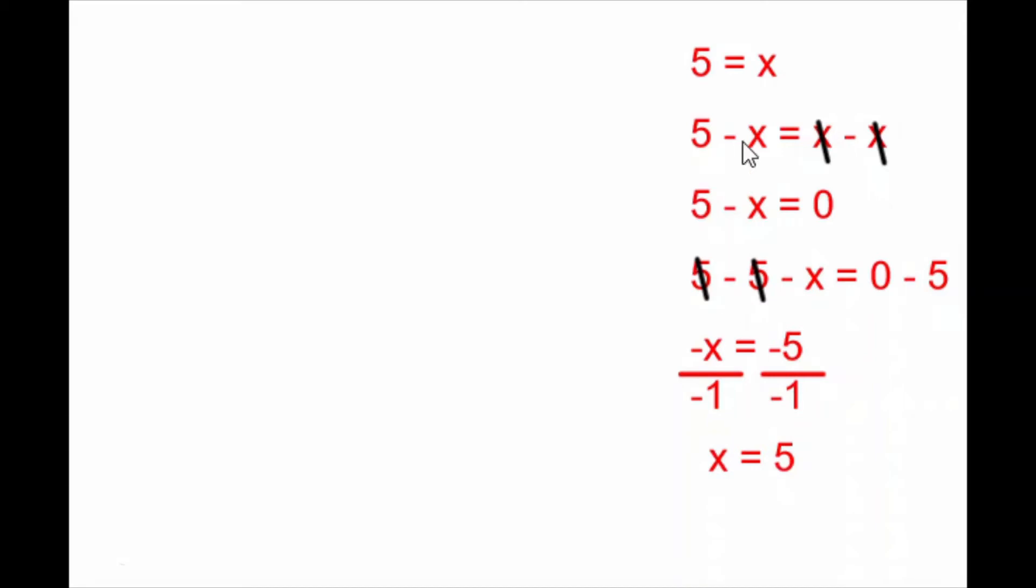I have the same equation that I started with except written backwards. And these steps show that I actually followed all of the rules of algebra to get the equation to turn backwards that way. Well, this of course suggests a shortcut. Anytime we see 5 equals x, if we want we can just write x equals 5 and we don't have to show all of these steps in the middle.